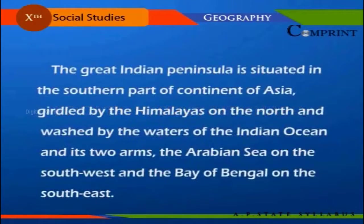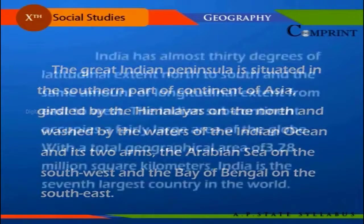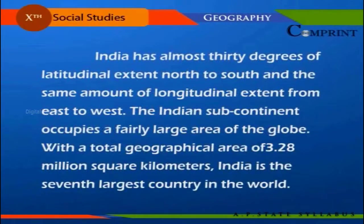Regarding location, size, and shape — the great Indian Peninsula is situated in the southern part of the continent of Asia, guarded by the Himalayas on the north and washed by the waters of the Indian Ocean and its two arms: the Arabian Sea on the southwest and the Bay of Bengal on the southeast. India has almost 30 degrees of latitudinal extent from north to south.